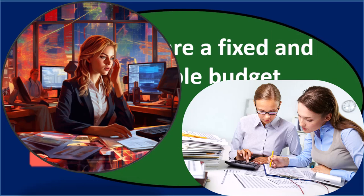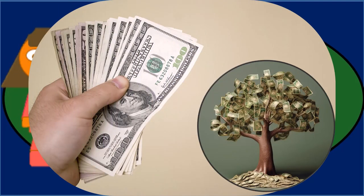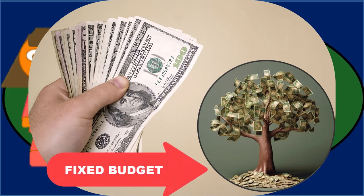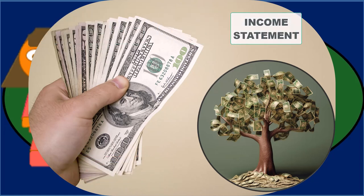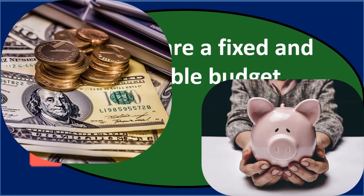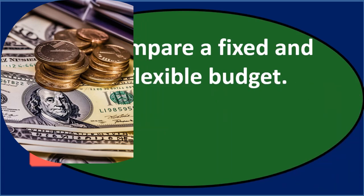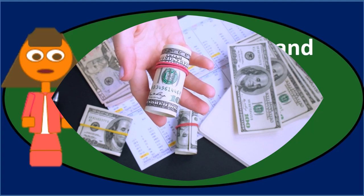A fixed budget is generally prepared before an operating period and presents sales and expenses for a single production amount. We'll have a set level of production, and the fixed budget will be based on that. We may prepare it in a normal income statement format — more of a GAAP-style setup — with sales, then cost of goods sold, selling and admin expenses, as opposed to breaking costs out by behavior between fixed and variable in a contribution margin format, where we have sales minus variable costs to get the contribution margin, then subtract fixed costs to arrive at net income.